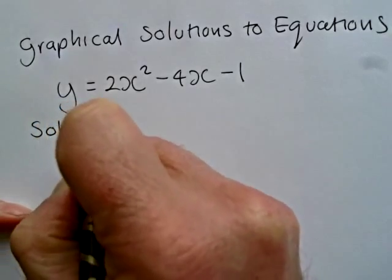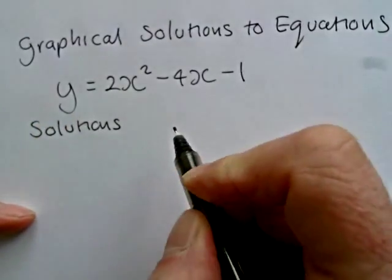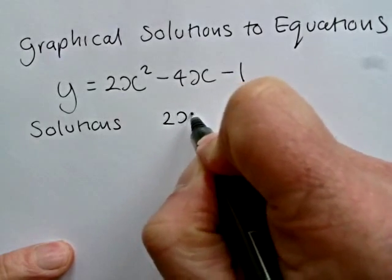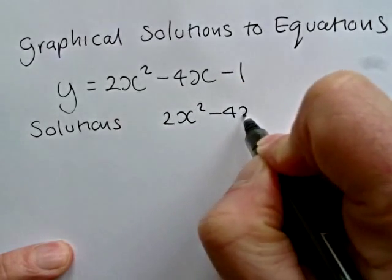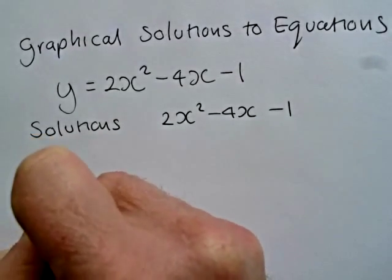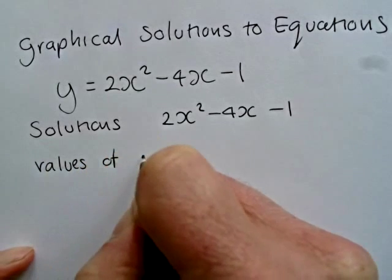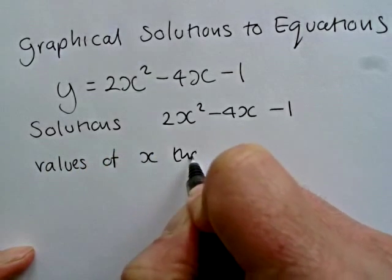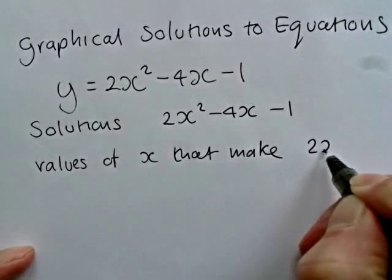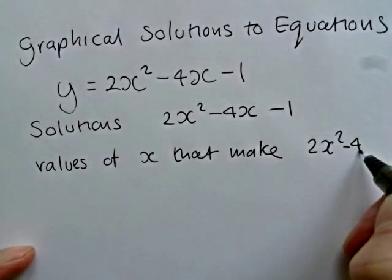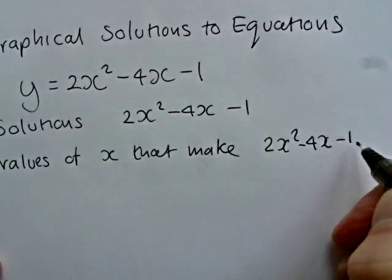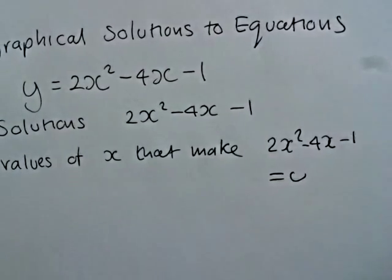First of all, you need to understand what is meant by solutions. Solutions to equations are the values of x that make 2x squared minus 4x minus 1 equal to 0. We'll put that there, equal to 0.